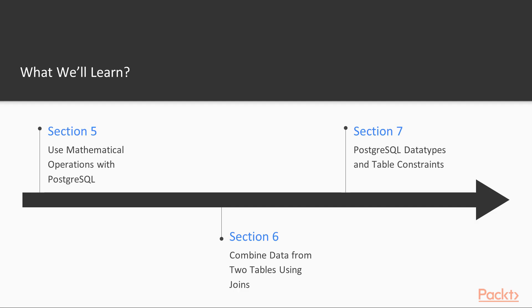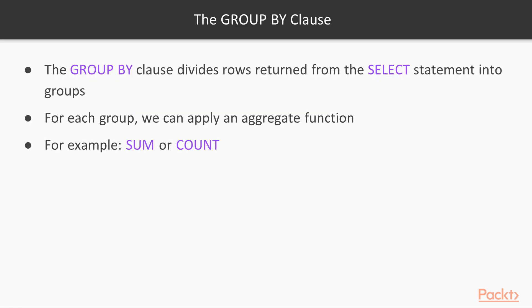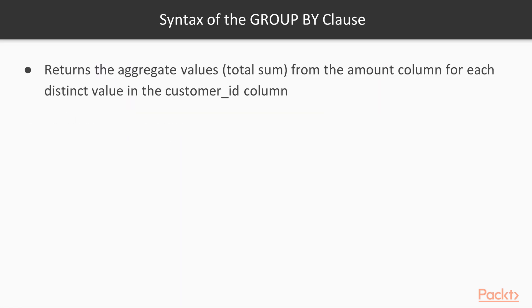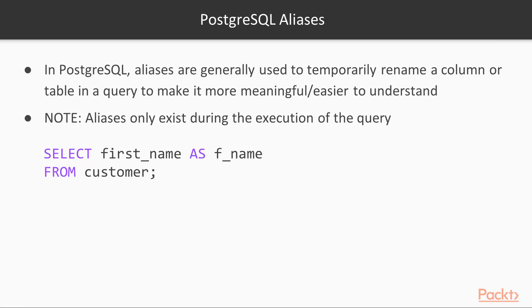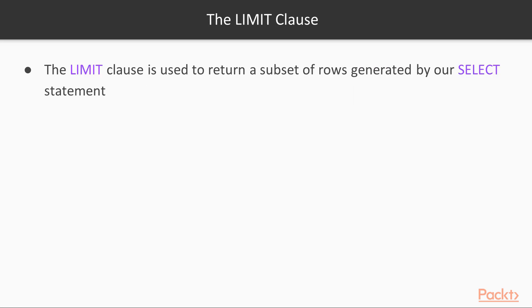For section 6, we'll learn an array of advanced skills such as the GROUP BY clause, and how to use it with the HAVING clause. We'll also learn how to use the LIMIT clause, and how to relate the data from one table to another using inner and outer joins.